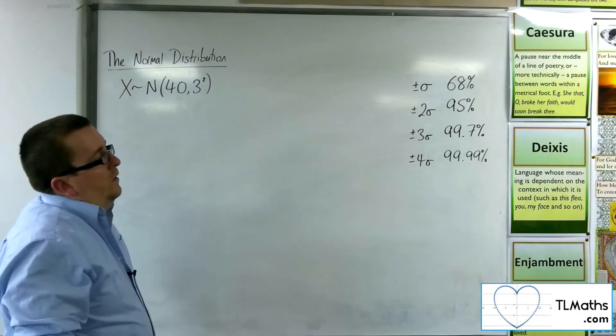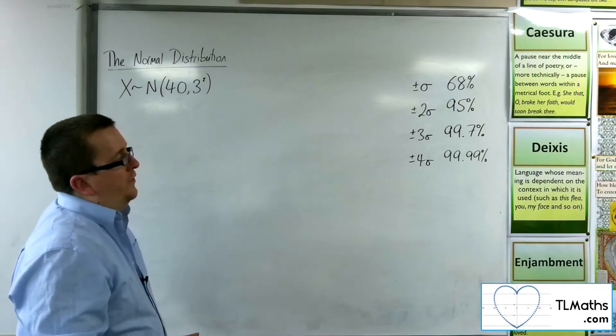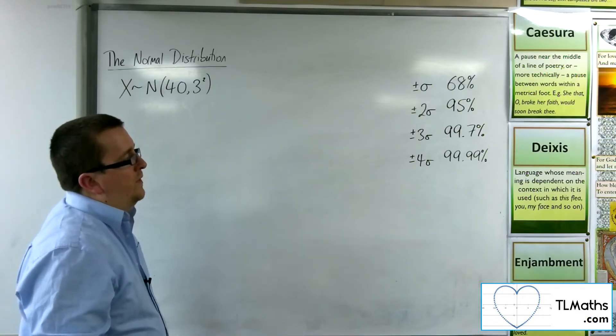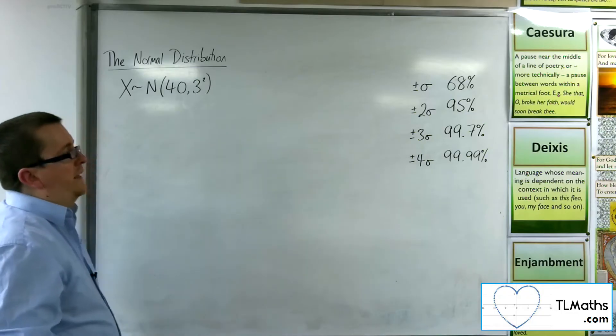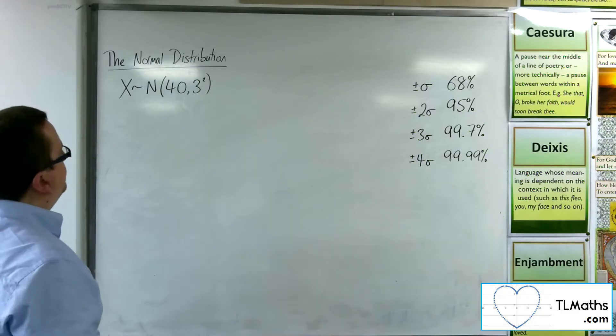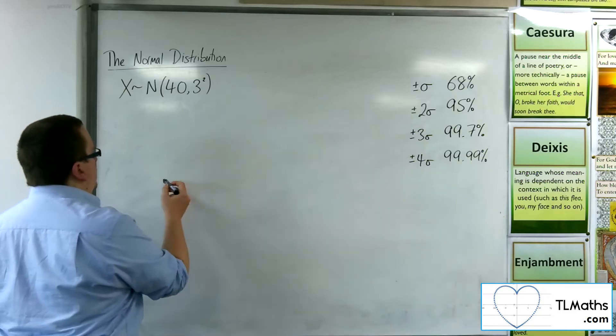Okay, so when we talk about this, we often say that we're within three standard deviations of the mean, the majority of the data. That's usually what we consider. So, let's say I'm going to draw this histogram.